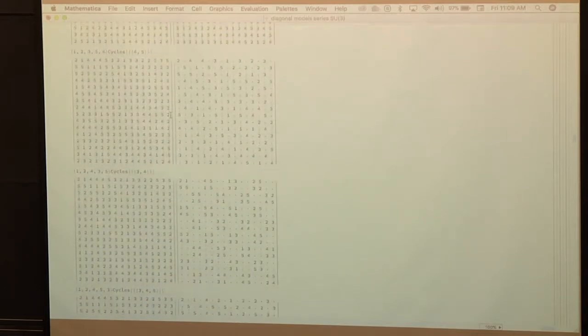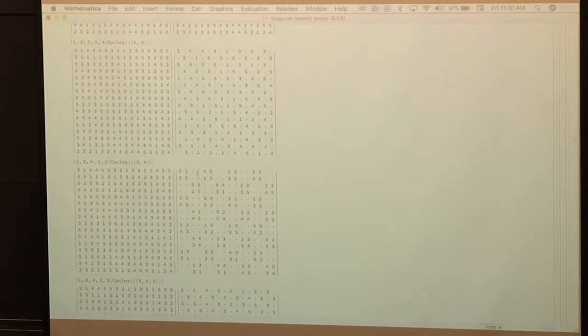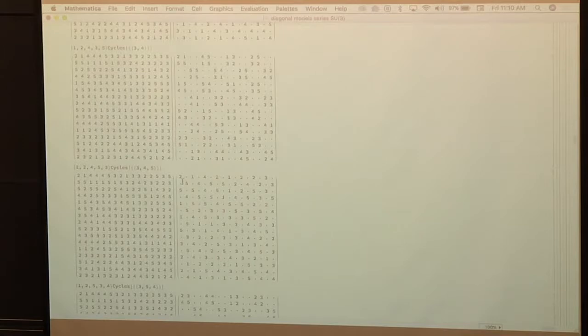And you can see that here's another one. The cycle is three, four. As you can see, again, it introduces a lot of zeros. Yes, so basically, it makes it more diagonal.